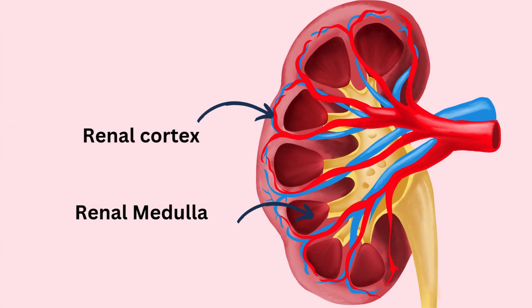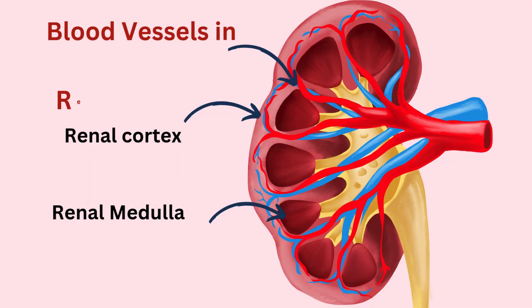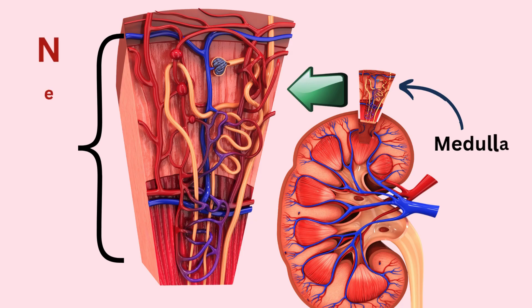The renal pyramids are separated by renal columns made of cortical tissue. Blood vessels present in the renal columns pass blood to the renal cortex then into the renal medulla, containing nephrons where the actual process of filtration happens.